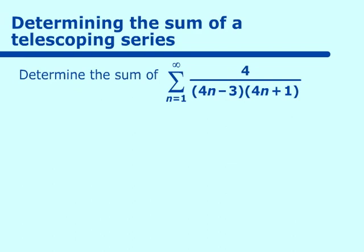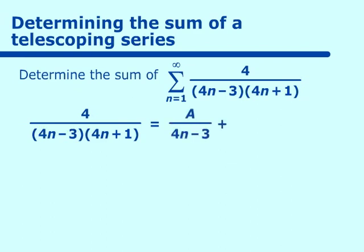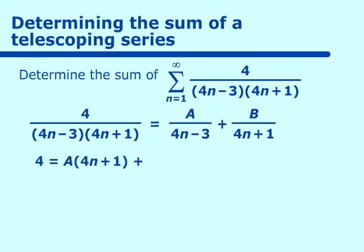Let's do the same with this one. We have 4 over (4n-3)(4n+1) equals A over (4n-3) plus B over (4n+1). Simplifying this, we have 4 equals A(4n+1) plus B(4n-3).